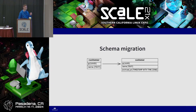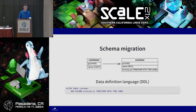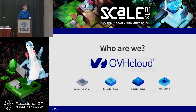Schema migration is the process of going from one state to another. For example, here we have two tables — one with customers — and we want to add a column to the customer table. For that we have DDLs, the data definition language, which is basically ALTER statements, CREATE, DROP.